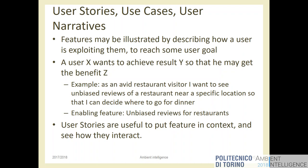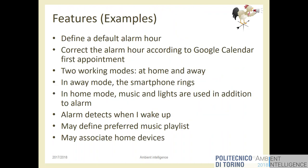If a feature is there but no user has a reason to activate it, it's useless or should be ranked very low. As an example from my fake intelligent alarm clock project: one feature is the user can define a default alarm hour. Another is that the system can automatically correct the alarm hour according to the user's Google Calendar.